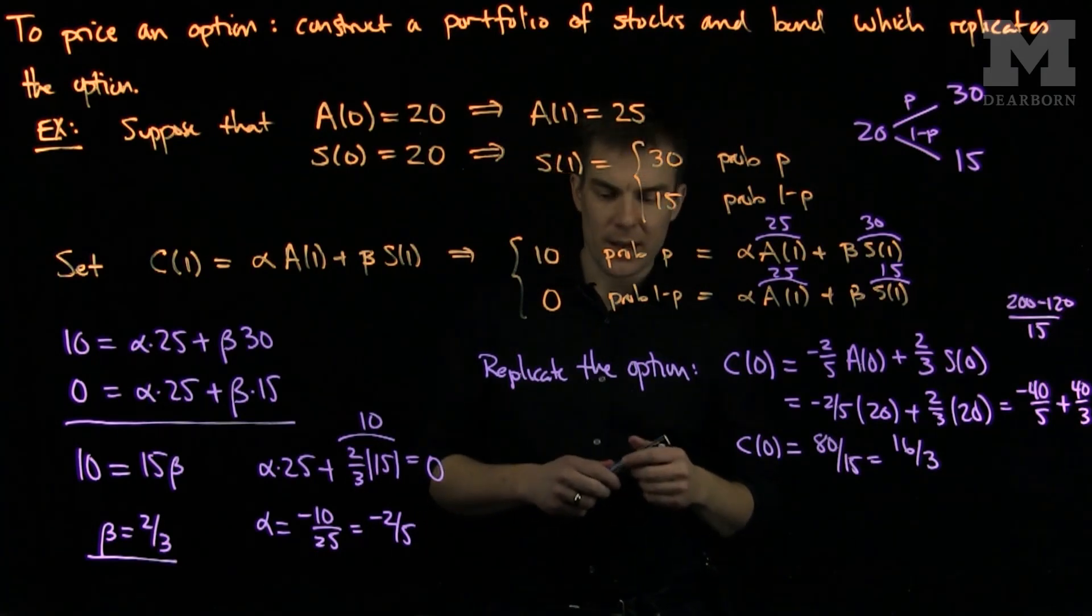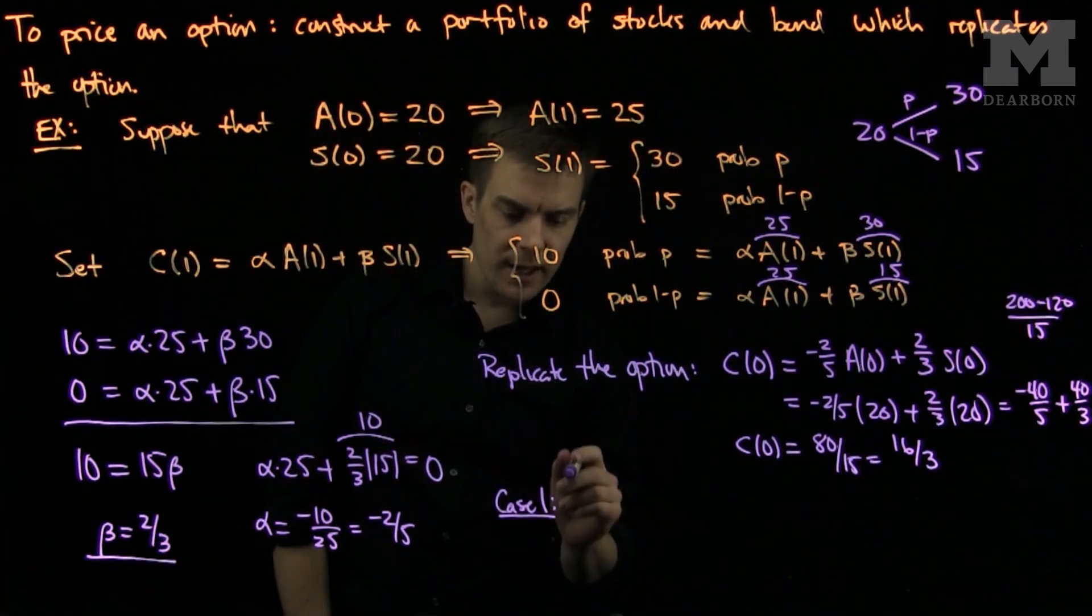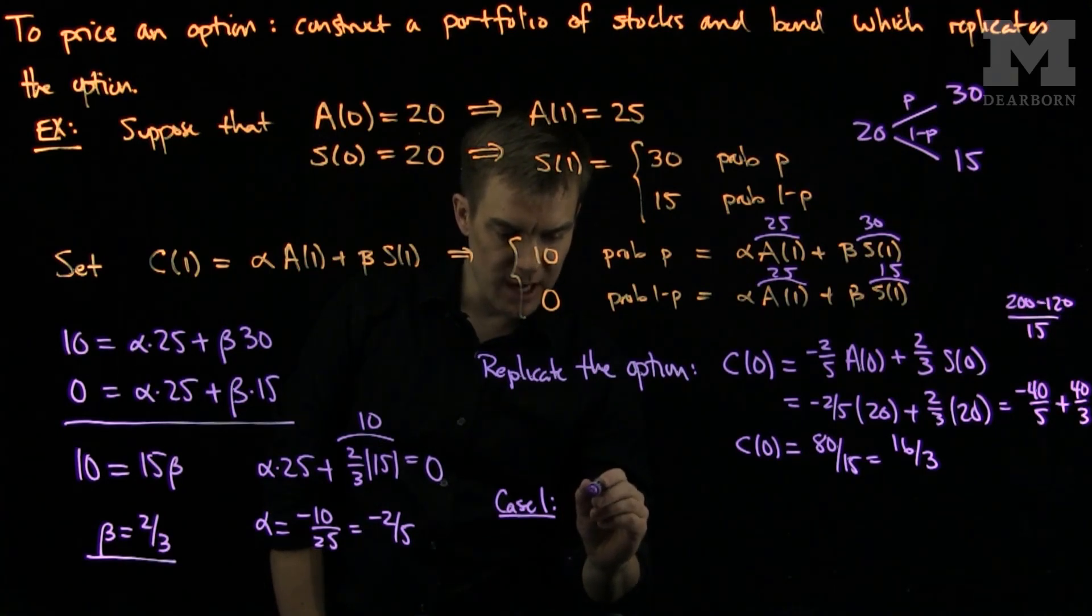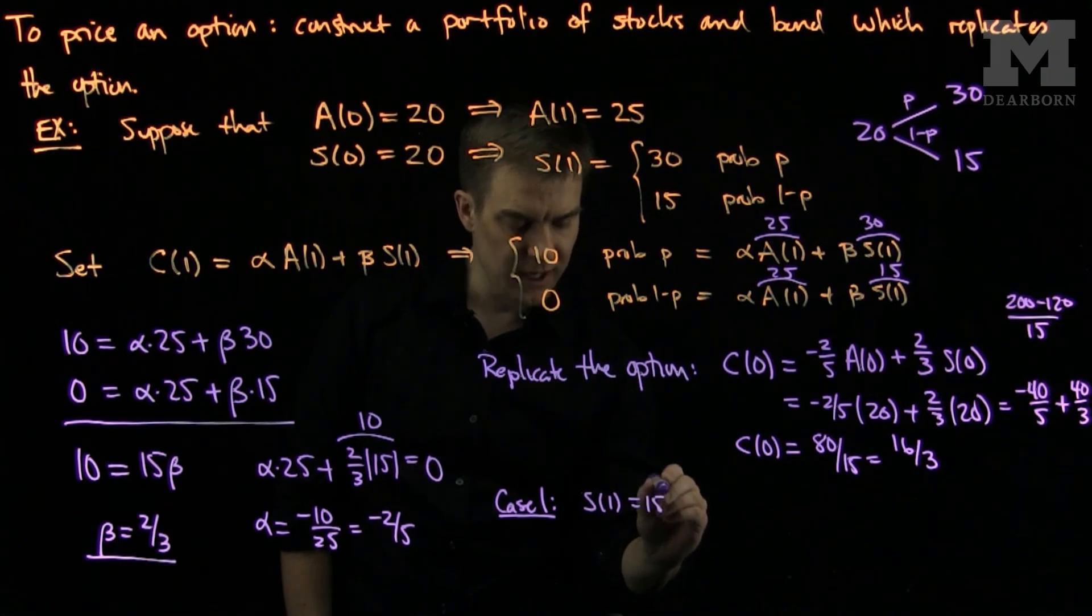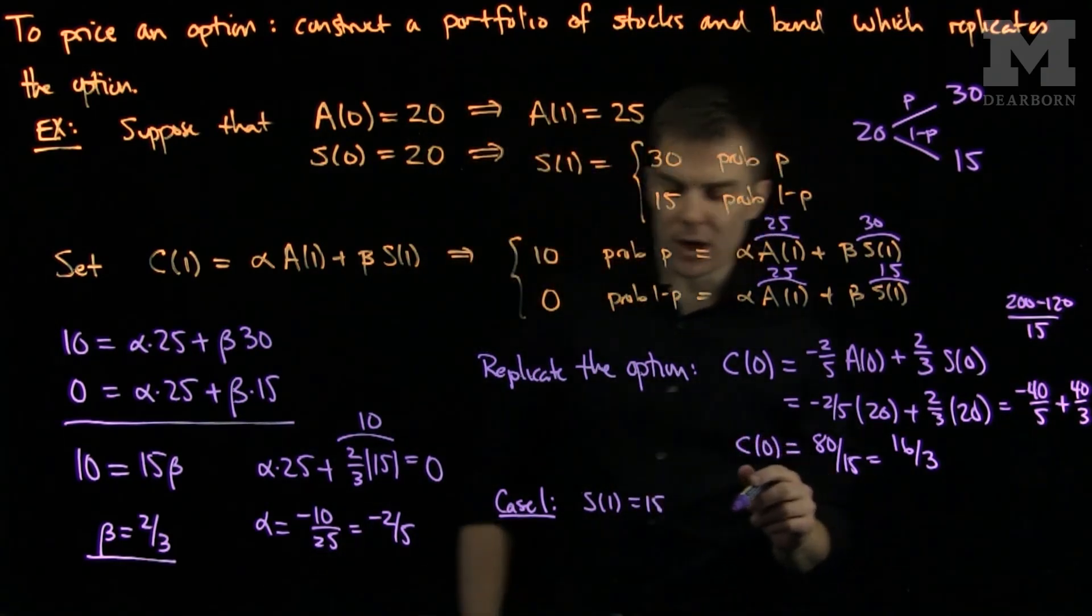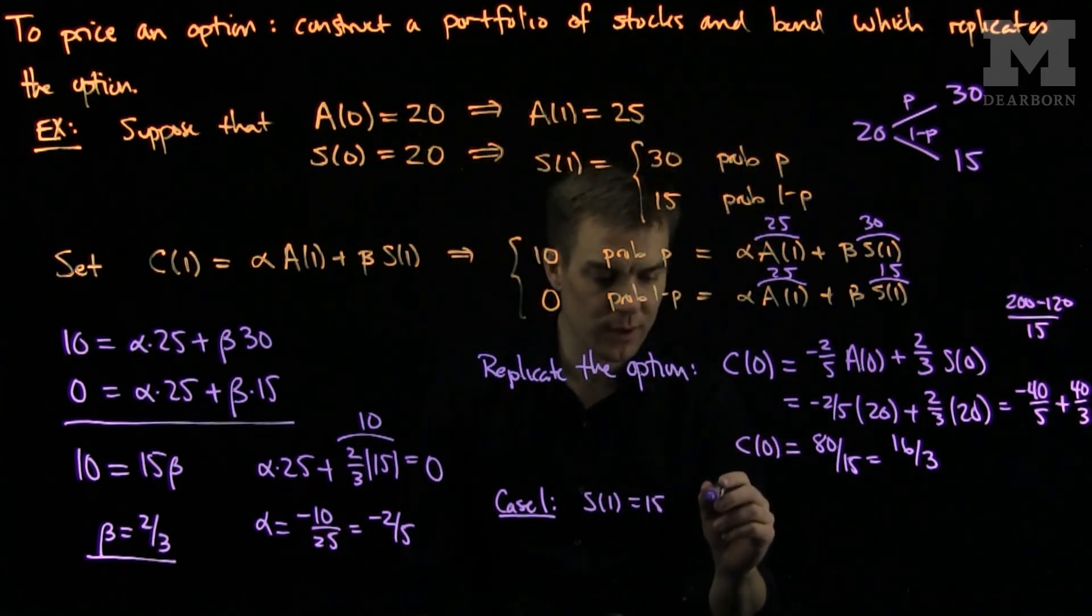So let's see why this is the case. There are two things that can happen. Case 1 is the case when the stock price goes down. In the case when S(1) is 15. In this case, our portfolio will gain us what? If S(1) is 15,